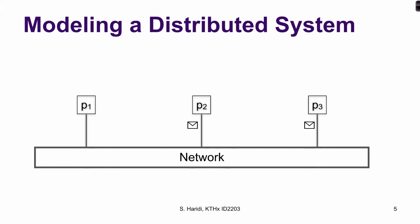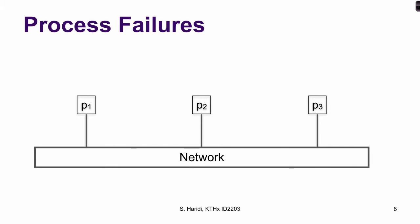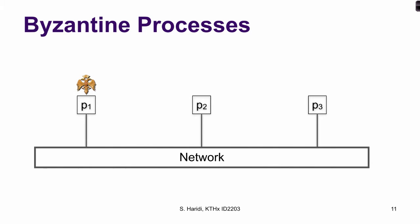Here is a situation where we have network failure, where some messages are dropped. And here is a situation where we have a process failure — the process crashes, will not receive any messages, and is out of the system. And we have Byzantine process failure, which means that processes behave in an arbitrary way, sending messages that are not adhering to the protocol.